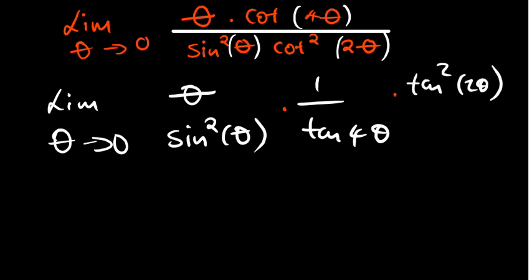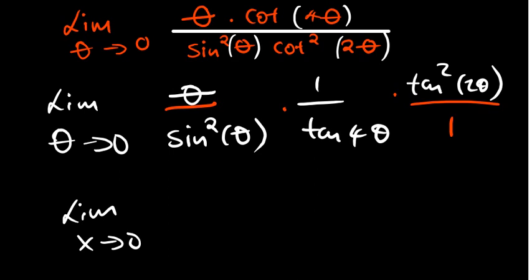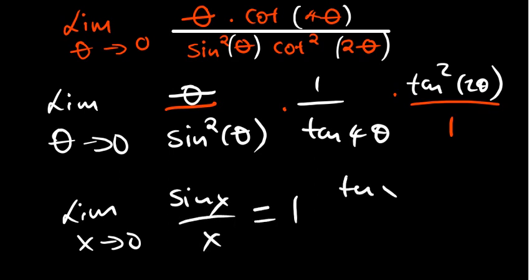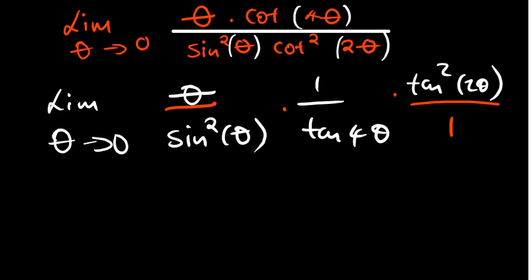We want to make sure that what we have is in line with the special trigonometric limits. For example, sin x over x is equivalent to 1, and even tan x over x is also equivalent to 1. So these are the common ones, and we need to make sure that whatever we have matches this form.